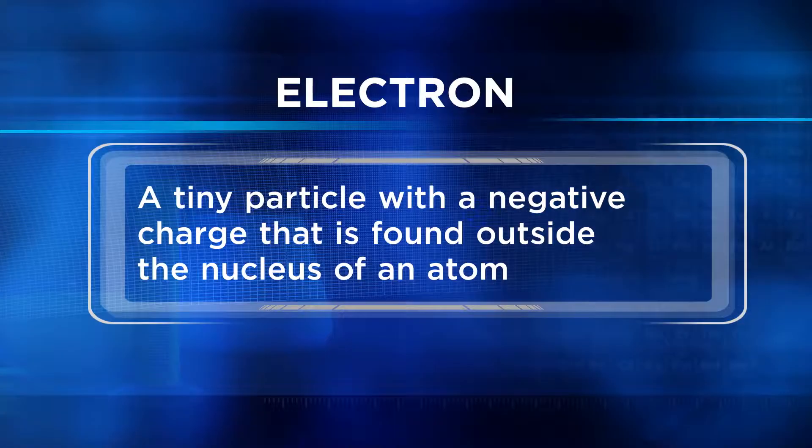Remember JJ Thomson and his model of the atom? He's credited with the discovery of the electron. An electron is a tiny, tiny particle with a negative charge that's found outside the nucleus of an atom. Electrons are really important to properties of the elements and bonding, but we'll cover that in a future unit.